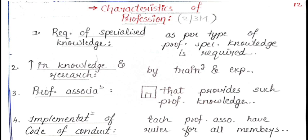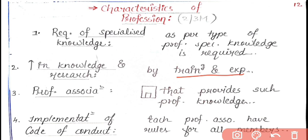The second characteristic is increase in knowledge and research. Once you have acquired some specialized knowledge, you have to keep increasing it and you have to do some research also. You can achieve this through training and experience — the more training you get and the more you practice the work, the more experience you gain, and accordingly your knowledge and research will grow.